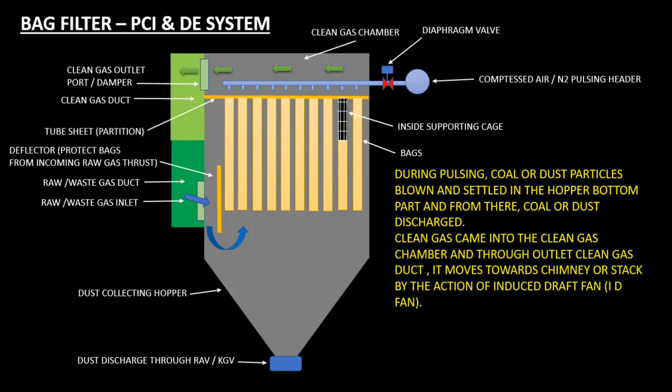Clean gas enters the clean gas chamber and exits through the outlet clean gas duct. It then moves towards the chimney or stack by the action of the induced draft fan, the ID fan.